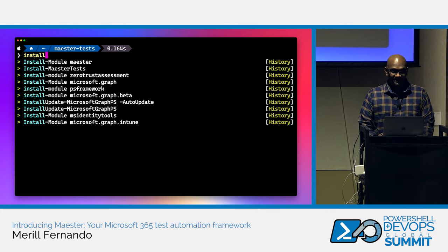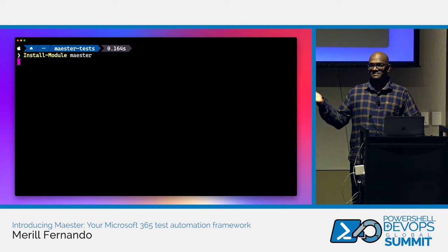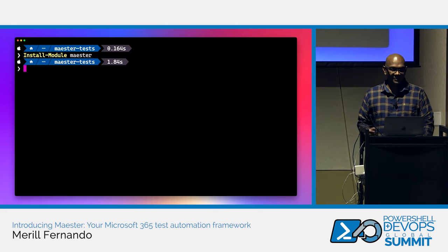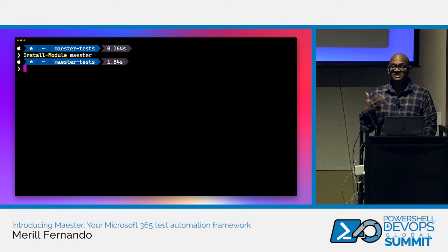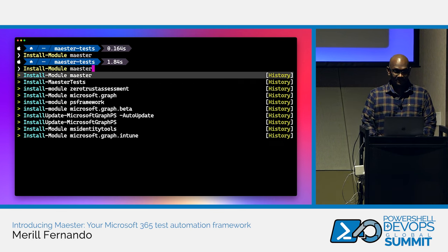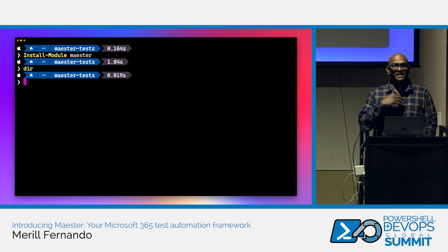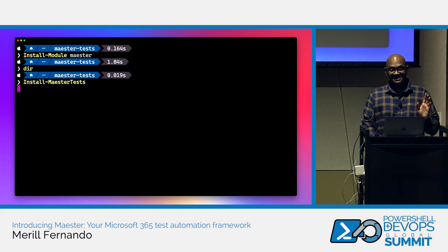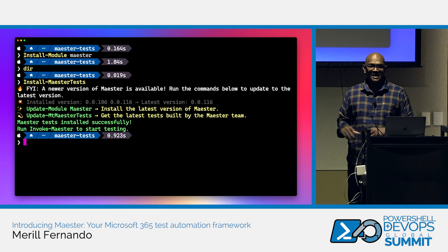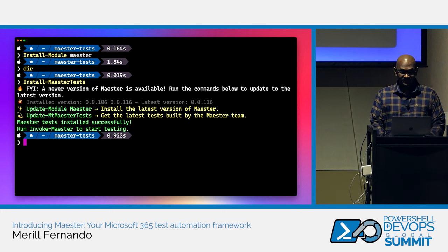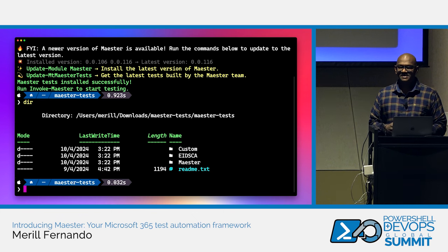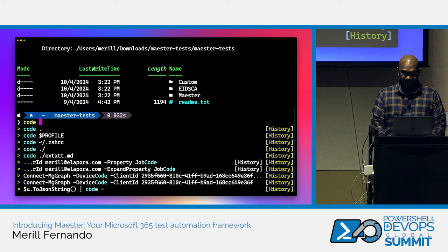I start by installing the Maester module — we've bundled it as a PowerShell module with some out-of-the-box Pester tests included. You just run 'Install-Maester' in an empty folder. It installs a bunch of out-of-the-box tests that we've defined as part of the Maester team.